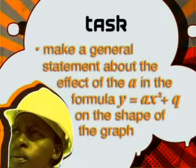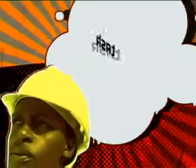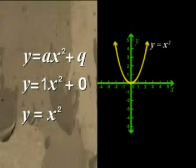Now it is your turn. Use what we have found to make a general statement about the effect of a in the formula y equals ax squared plus q on the shape of the graph. What happens to the graph when a is positive or negative? What happens when a is greater than 1 or less than negative 1? What happens when a is a value between 0 and 1, or between negative 1 and 0? In this lesson we have only looked at the influence of a, keeping q equal to 0. In the next lesson we will see what happens to the parent graph if we change the value of q in the formula.